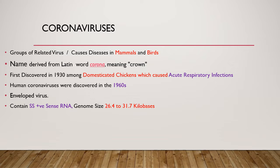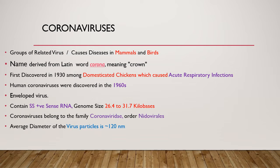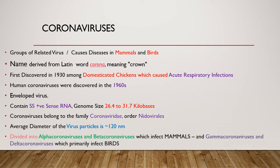RNA viruses are the most common causes of emerging diseases in humans, since they are highly susceptible to high mutation rates compared to DNA viruses. These RNA viruses evolve and cause new types of disease. The average diameter of the virus particle is around 120 nanometers. Coronaviruses can be divided into four divisions: alpha, beta, gamma, and delta. Alpha and beta coronaviruses infect mammals, while gamma and delta coronaviruses infect birds.